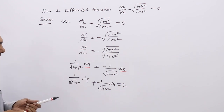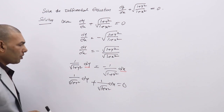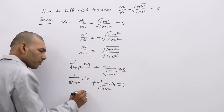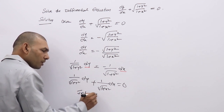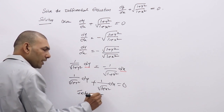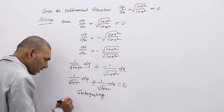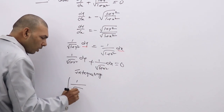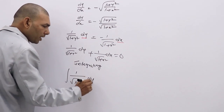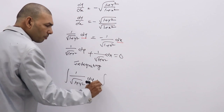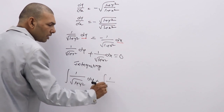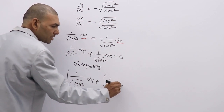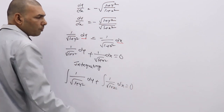Now, integrate to get the general solution of the given DE. Integrating both sides: ∫(1/√(1+y²)) dy + ∫(1/√(1+x²)) dx = 0.